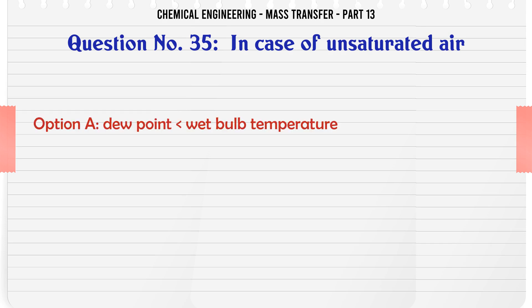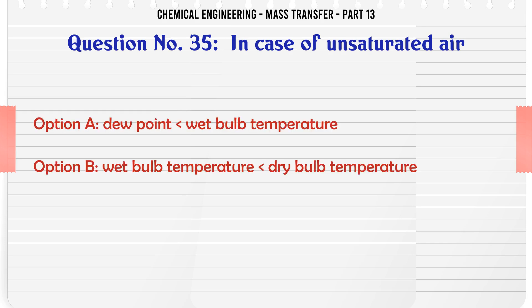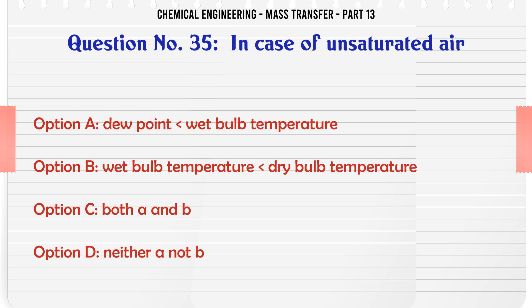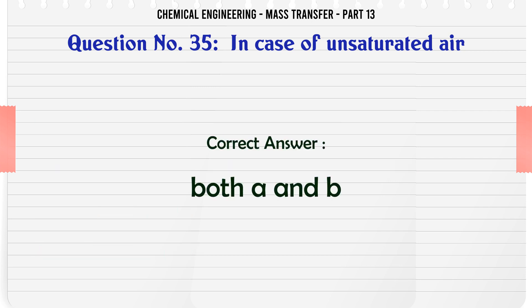In case of unsaturated air: A. Dew point < wet bulb temperature. B. Wet bulb temperature < dry bulb temperature. C. Both A and B. D. Neither A nor B. The correct answer is: Both A and B.